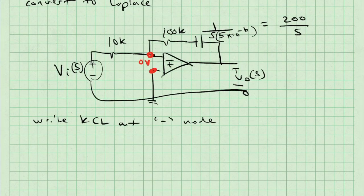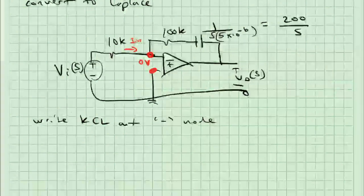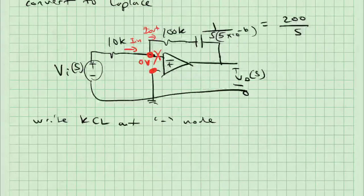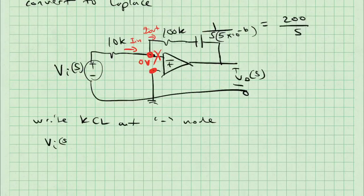Secondly, I know that there is no current that goes into either the minus or the plus terminal. So I can almost ignore the existence of that wire. Using this fact, I'll write Kirchhoff's current law at the minus node. I know that Kirchhoff's current law tells me that the current in is equal to the current out.